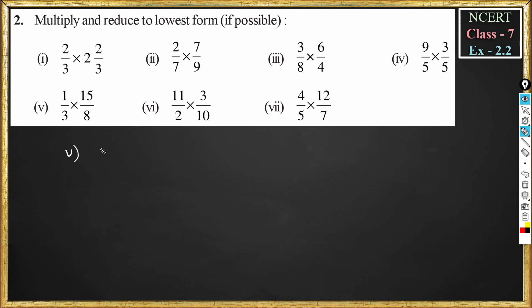Problem number 5: 1 by 3 multiplied by 15 by 8. This becomes 1 into 15 divided by 3 into 8. 1 into 15 is 15, 3 into 8 is 24. The common factor is 3. 3 times 5 is 15, 3 times 8 is 24. The answer is 5 divided by 8. This is the lowest form of this fraction.